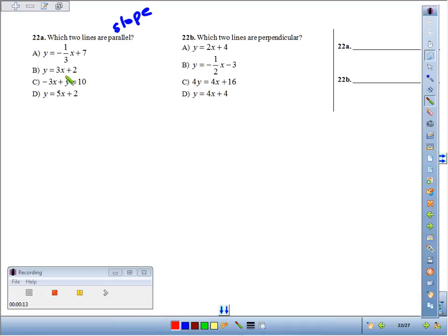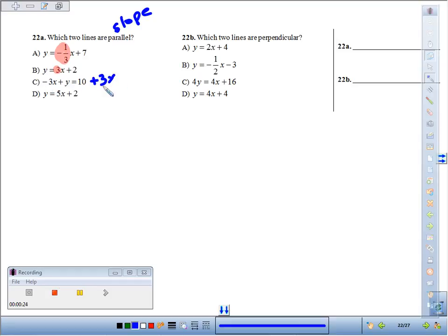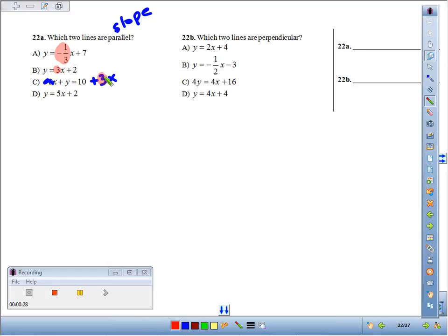We've got a slope of negative one-third in A, a slope of 3 in B. In order to identify the slope, you have to have it in slope-intercept form. So in C, you'd have to add 3x to both sides to find out that the slope in C is positive 3, and the slope in D is 5.